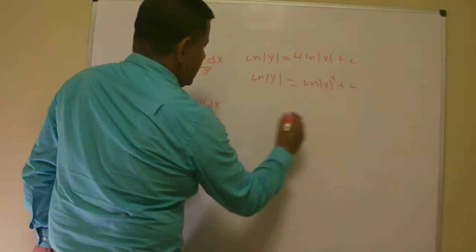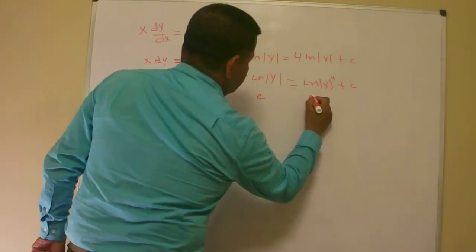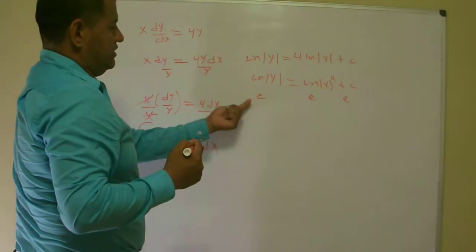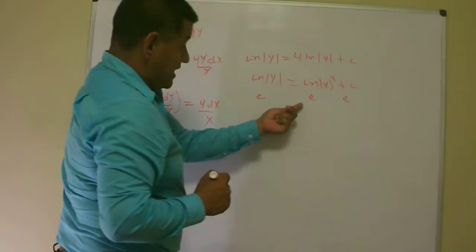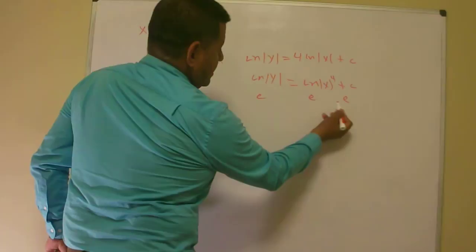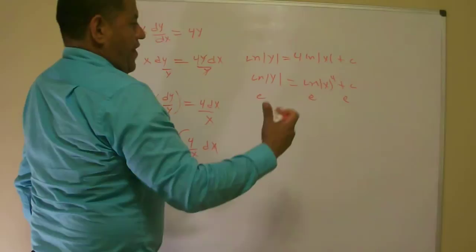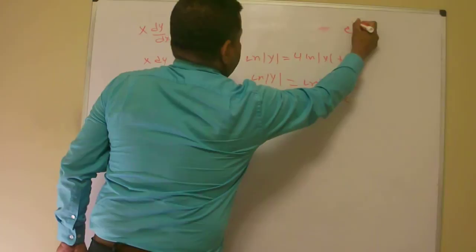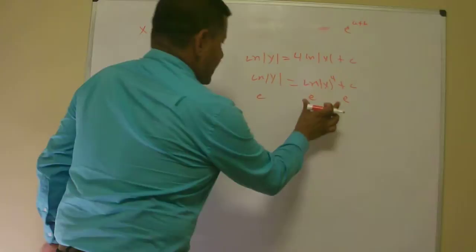If I take the e on both sides, this ln right here cancelled because I take the e. And this e right here, they are like bases, so this is in the form of e to the a plus b.